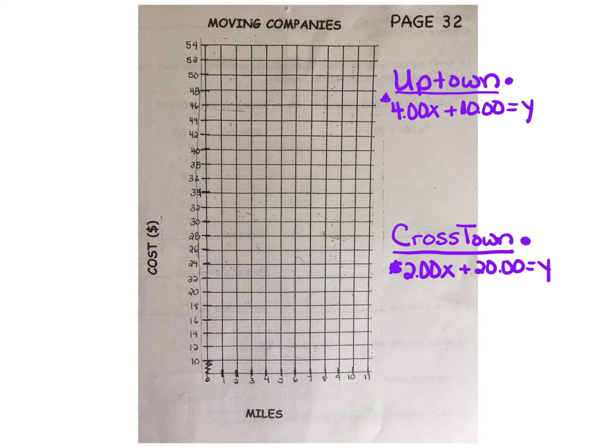Let's start with the equation for Uptown Movers. We have $4 times every mile x plus an initial deposit of $10 equals y.